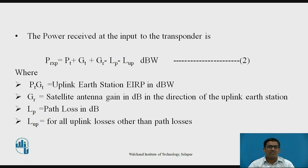The power received at the input to the transponder is P_Rxp = P_t + G_t + G_r - L_p - L_up. The unit of this received power is dBW. Where P_t G_t is the uplink earth station EIRP in dBW. G_r is satellite antenna gain in dB in the direction of the uplink earth station. L_p is the path losses in dB. L_up is for all uplink losses other than path losses.